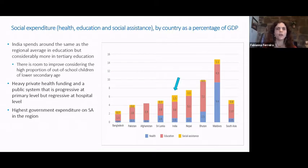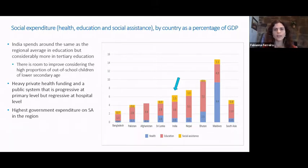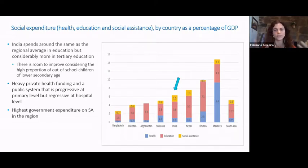In terms of outcome, India has a high proportion of out-of-school children of lower secondary age, though this figure is highly contested. UNESCO Statistical Database shows 15% — around 11 million children — are out of school, while UNDP shows a figure of less than 8%, so there is a significant difference.